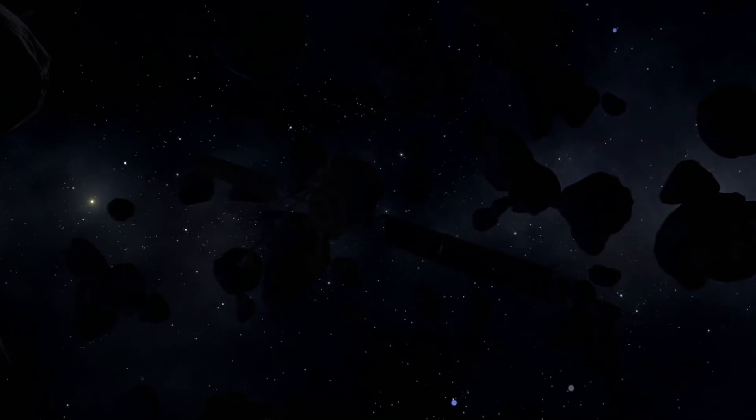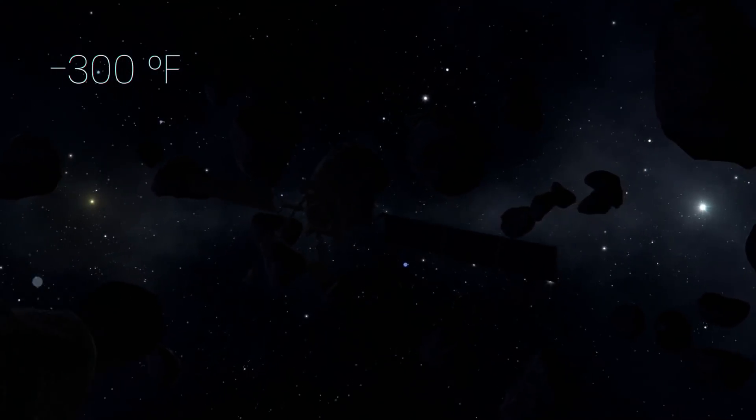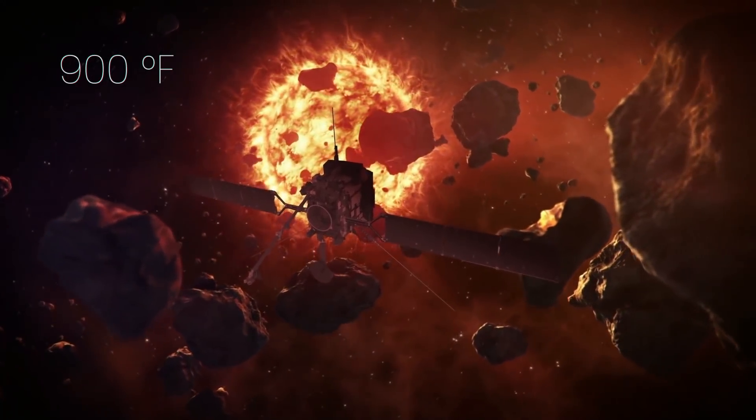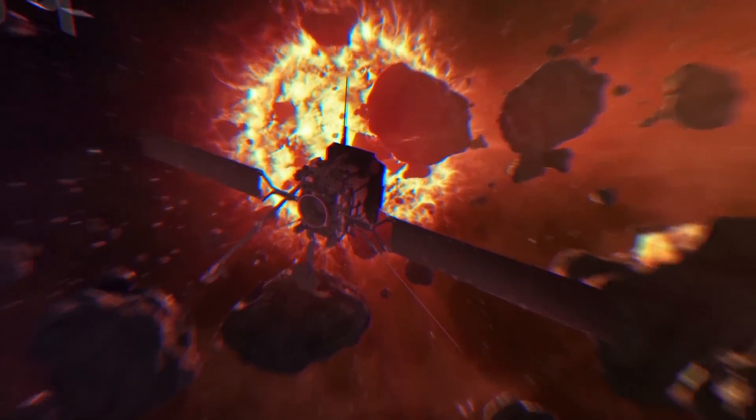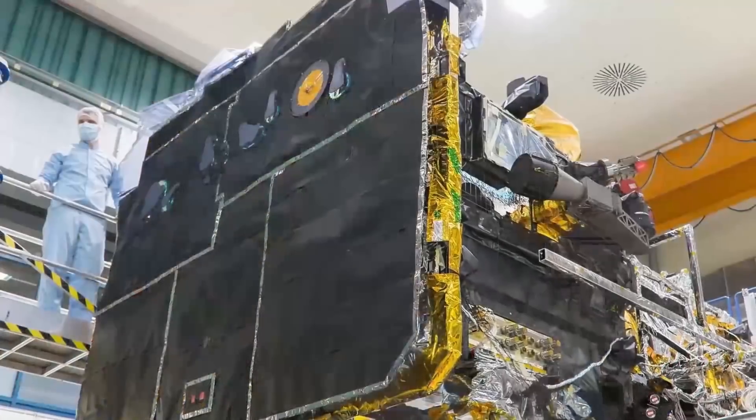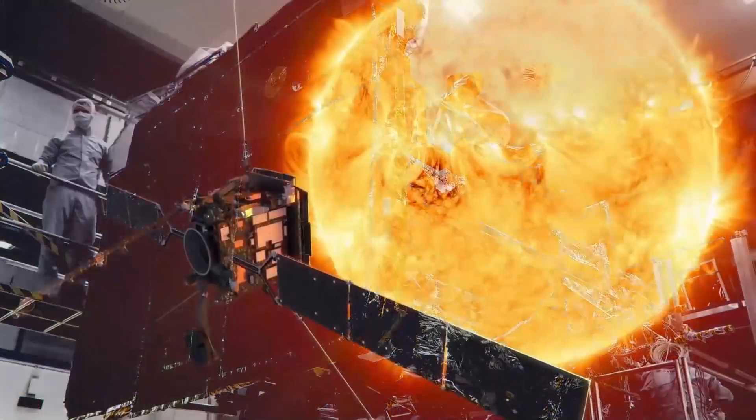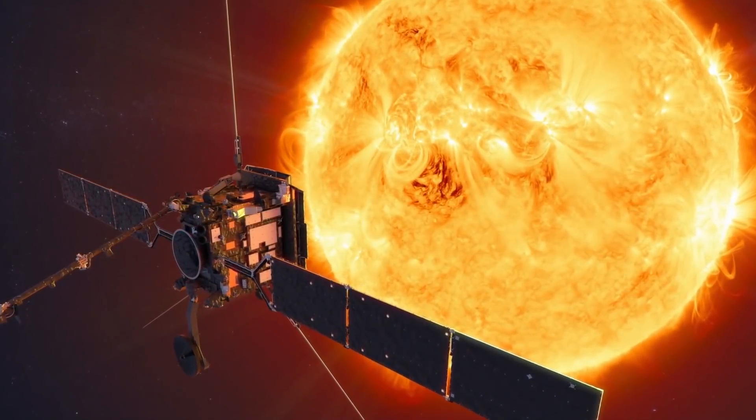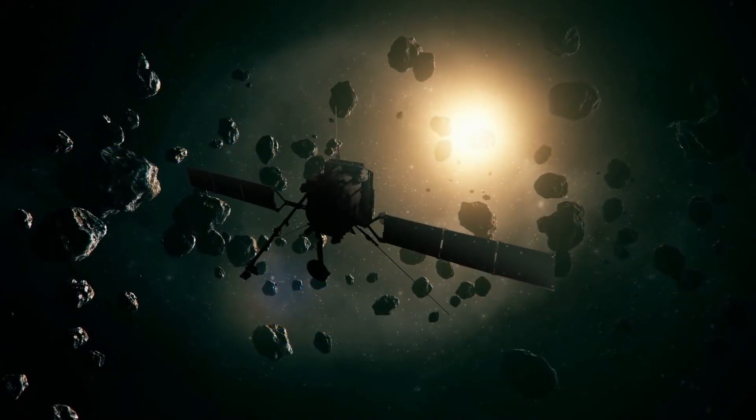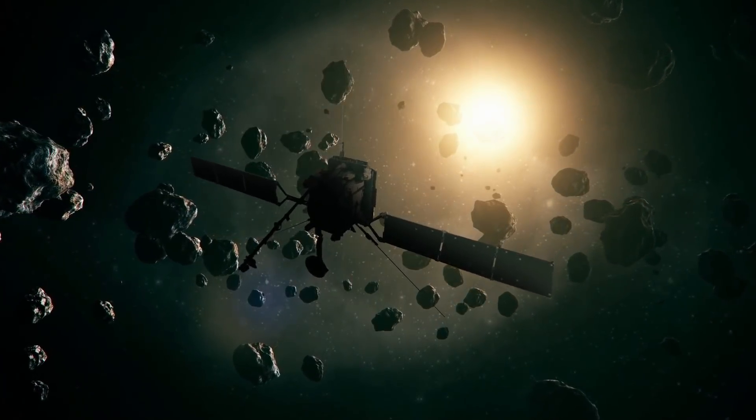Solar Orbiter has to withstand incredible temperatures from minus 300 degrees Fahrenheit in the cold of space to over 900 degrees Fahrenheit as it approaches the Sun. Because of this, the instruments onboard are protected by a titanium heat shield that has a calcium phosphate coating. But the environment is so harsh that it does not have a camera facing the Sun. Despite this, the Solar Orbiter has taken some incredible photographs and footage on its way to the Sun.